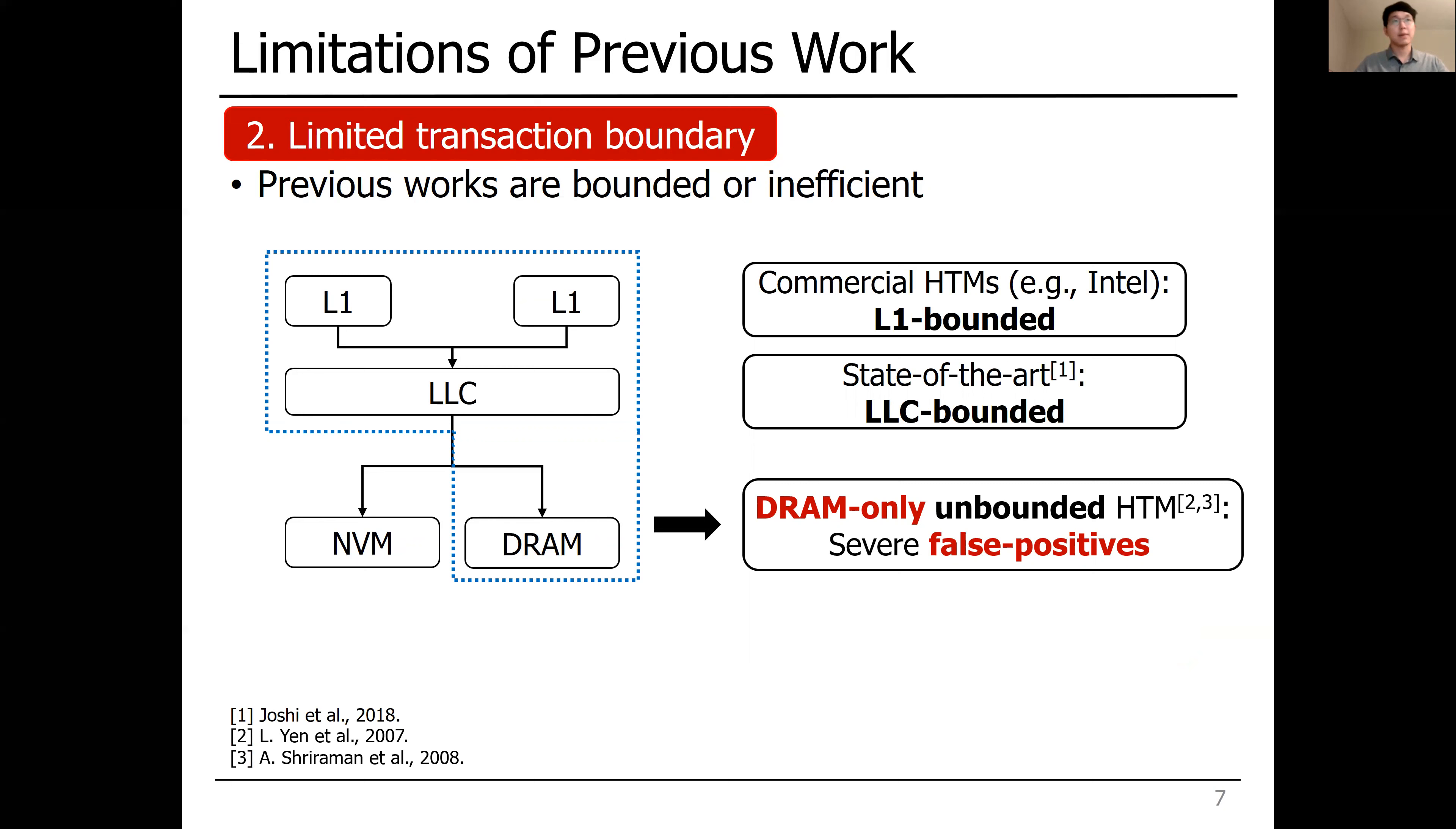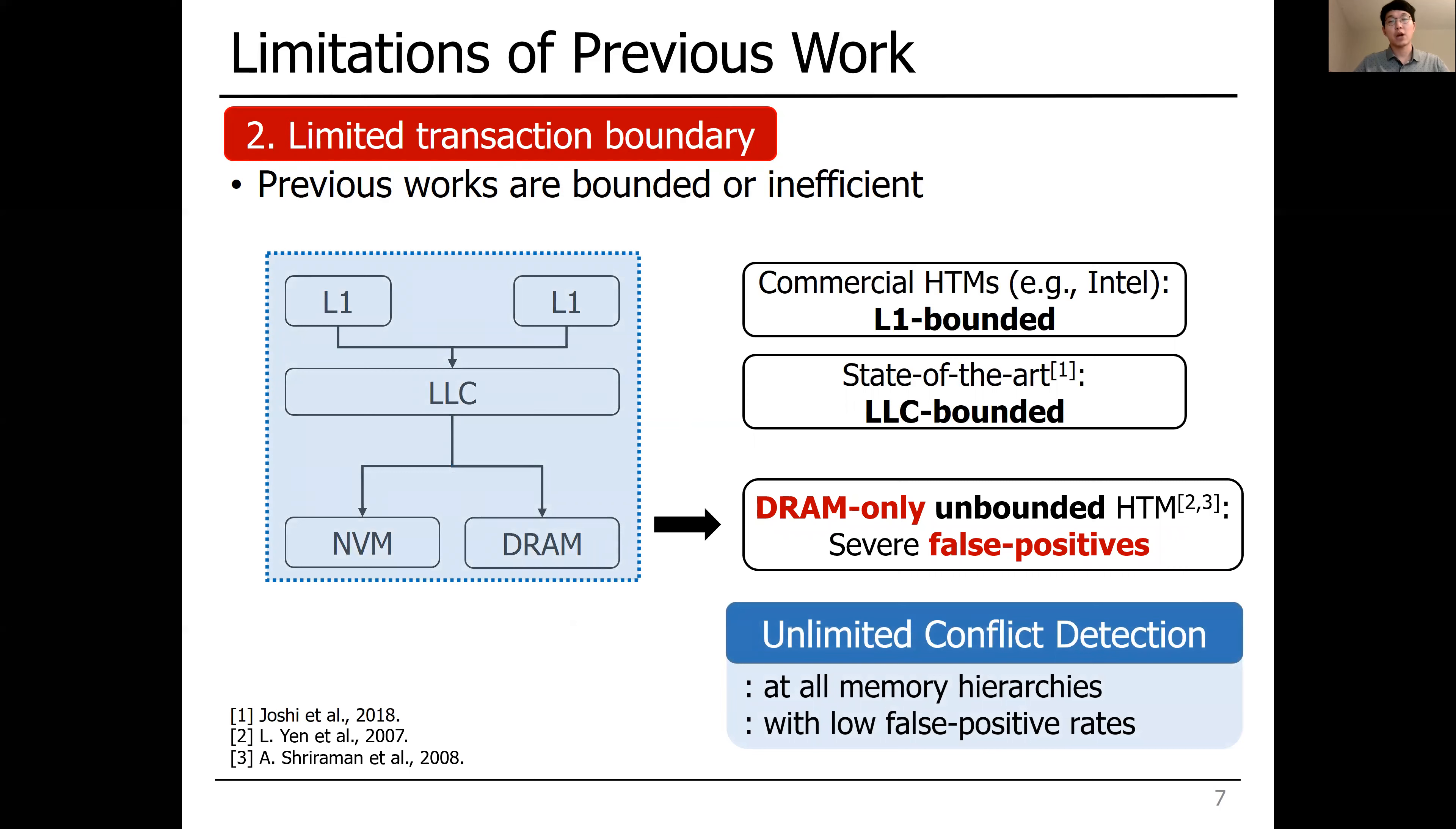On the other hand, previous unbounded HTM are volatile-only systems, meaning they are not satisfying durability. Also, they incorporate address signatures to capture conflicts, making them suffer from very high false-positive rates, which results in very high conflict rates. Therefore, durable HTM should be able to detect conflicts in all memory hierarchies with low false-positive rates.